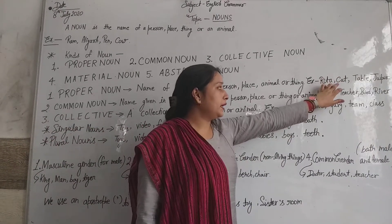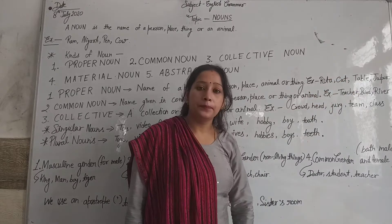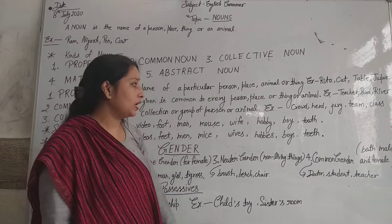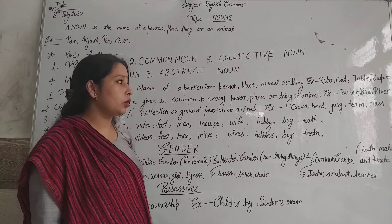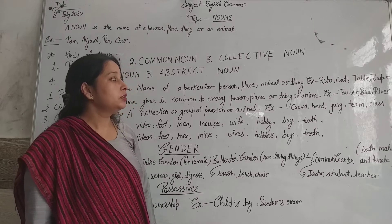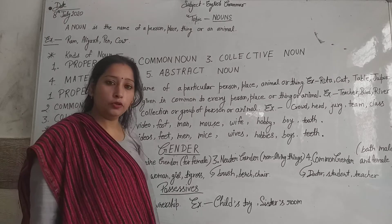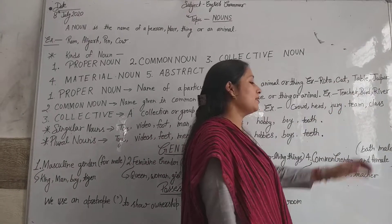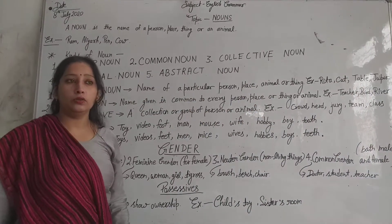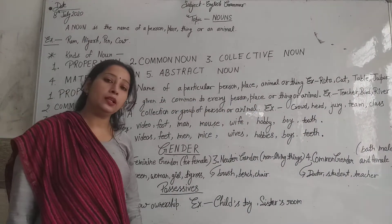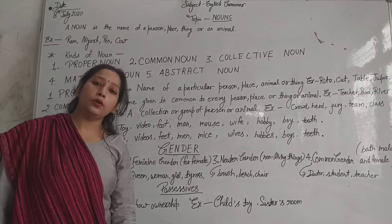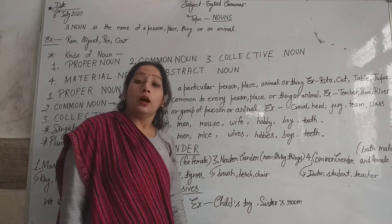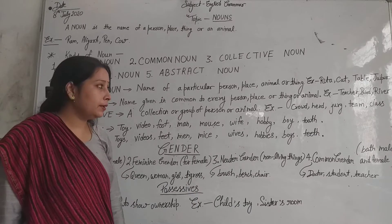If there are animals, there are cats, cows, dogs, buffalos, camels — they all have different names. Similarly, things like table, bench, water bottle all have different names. We call each by its specific name.